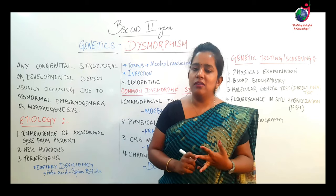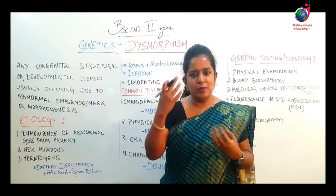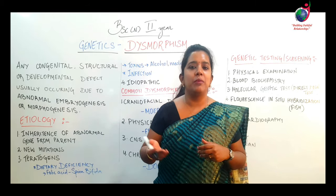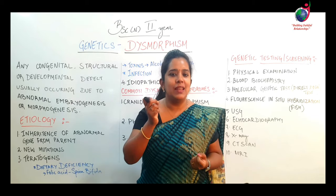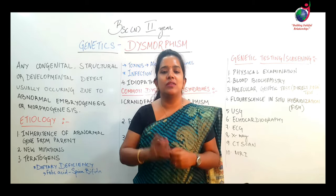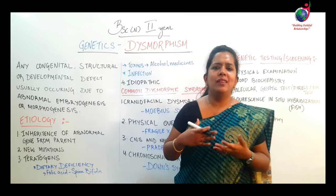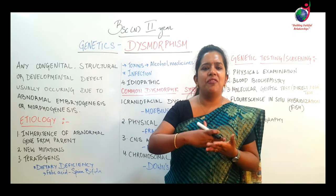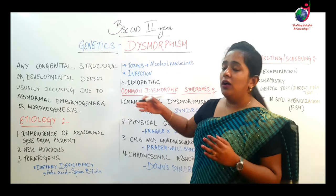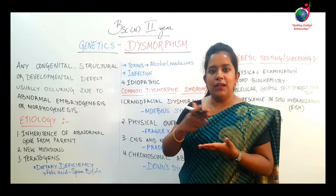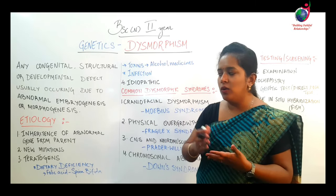If we talk about minor dysmorphisms — like hyperpigmentation, skin tags, or black spots — these are minor dysmorphisms. They don't have a very great impact on the physical appearance of a person as compared to a normal baby or normal person.